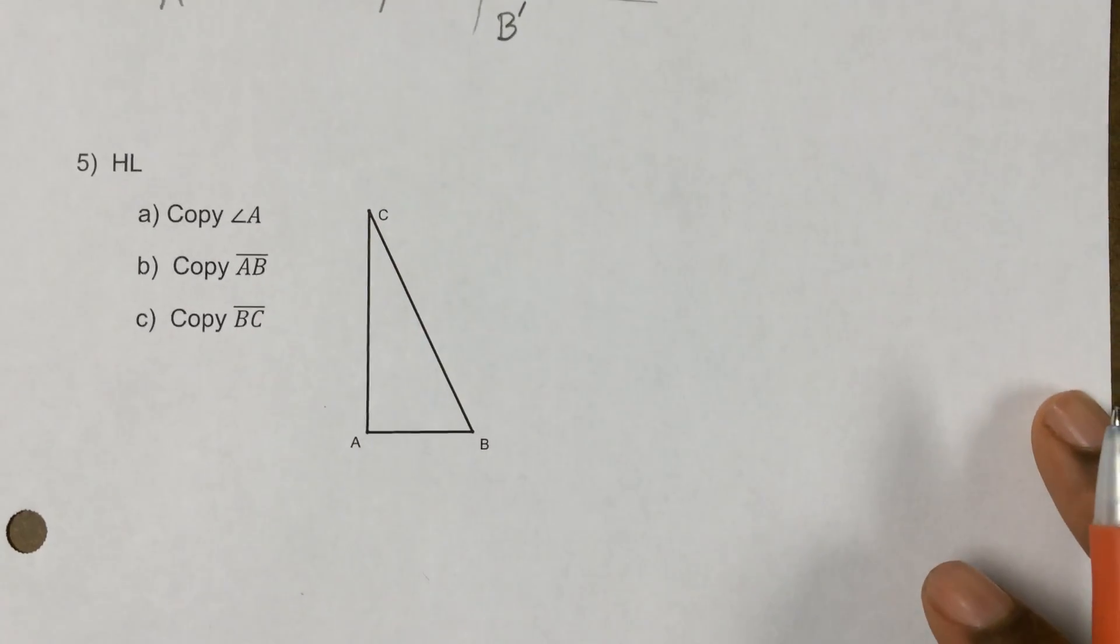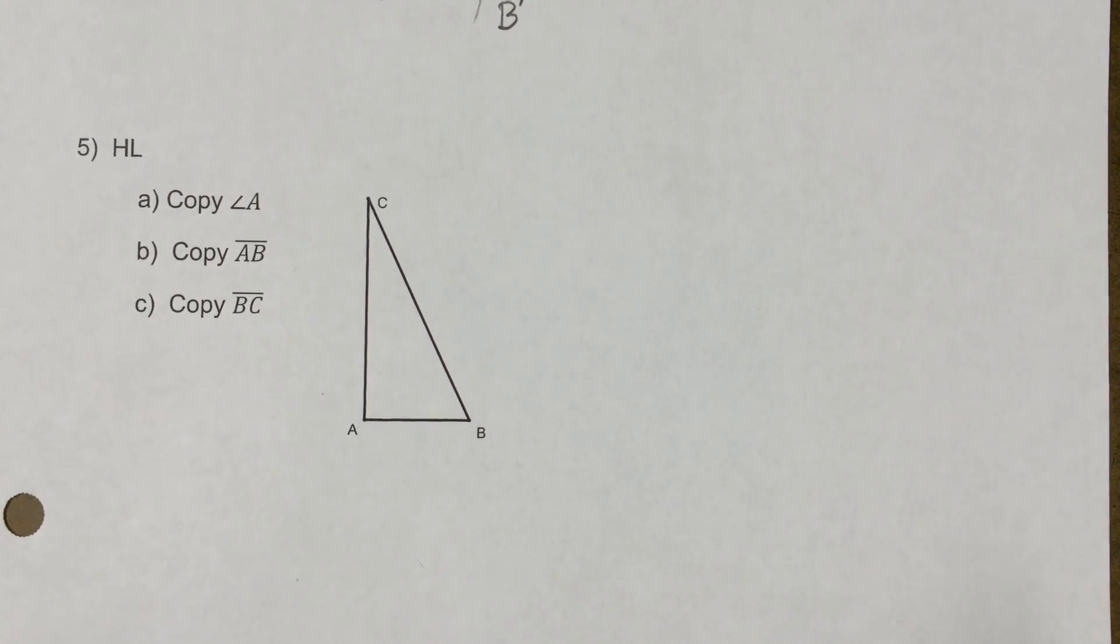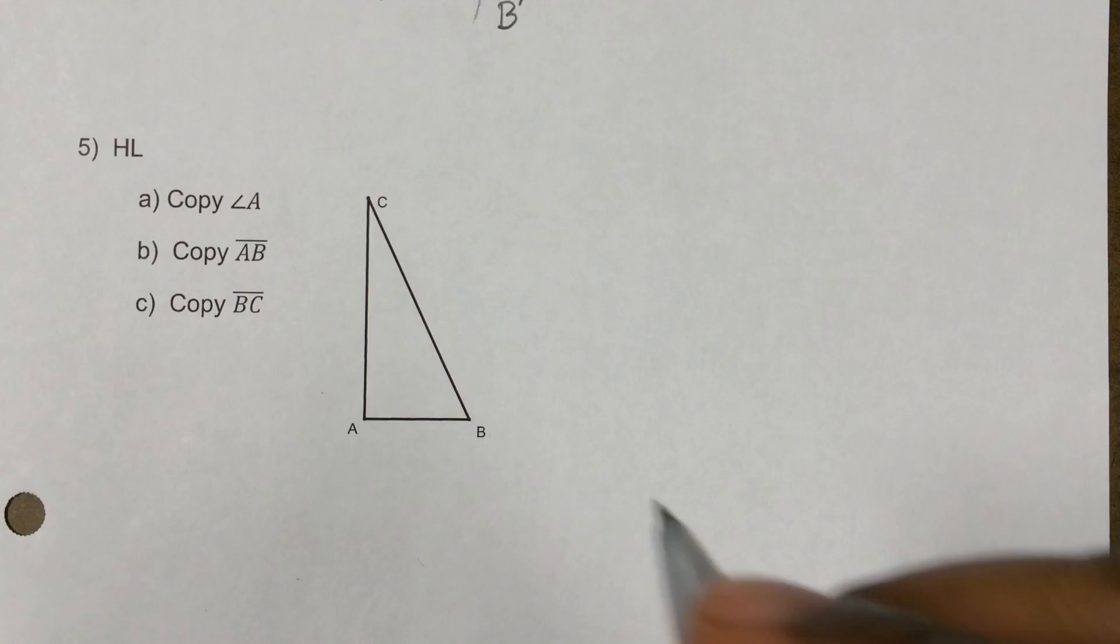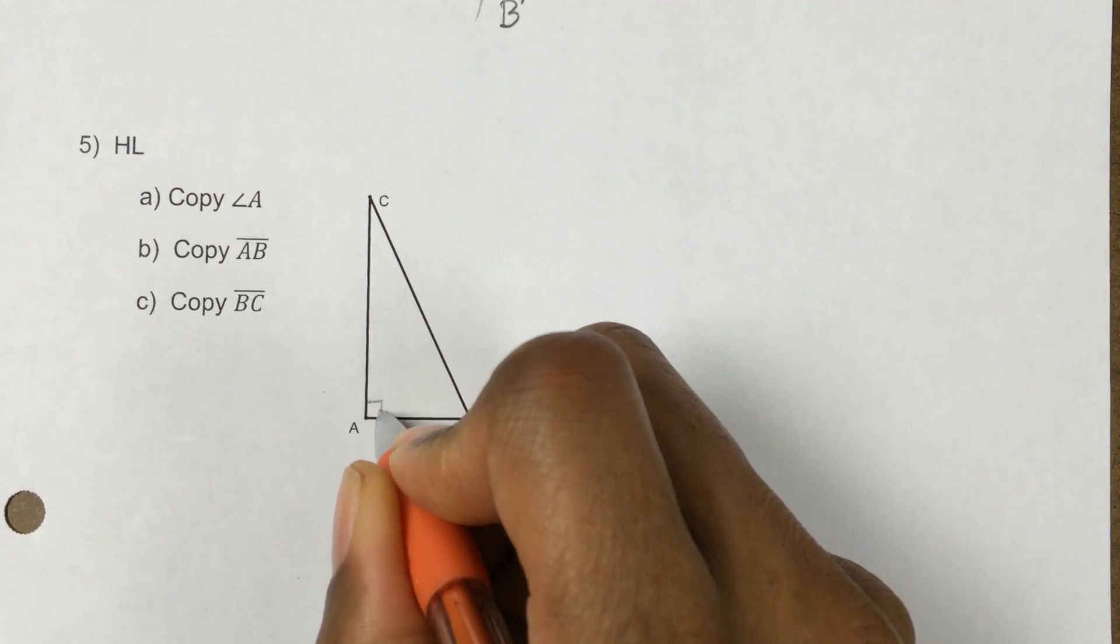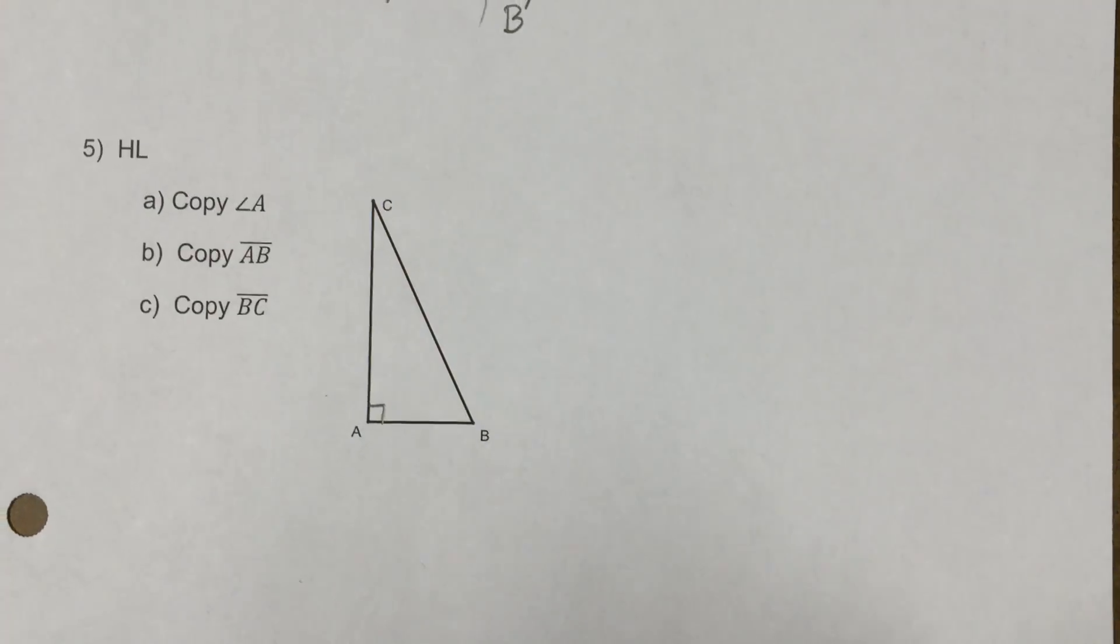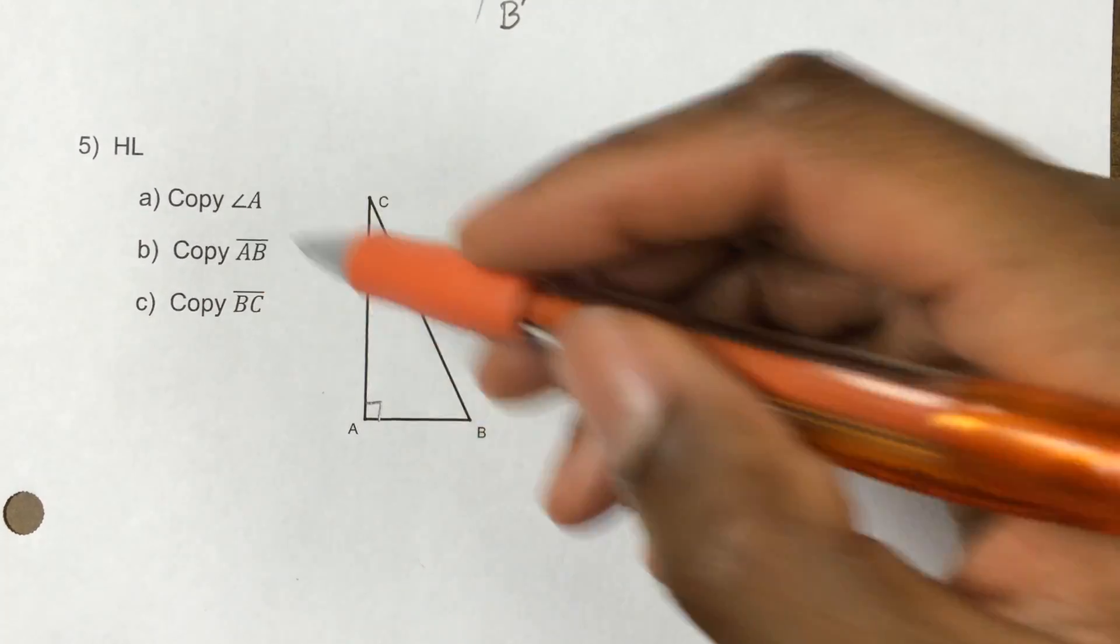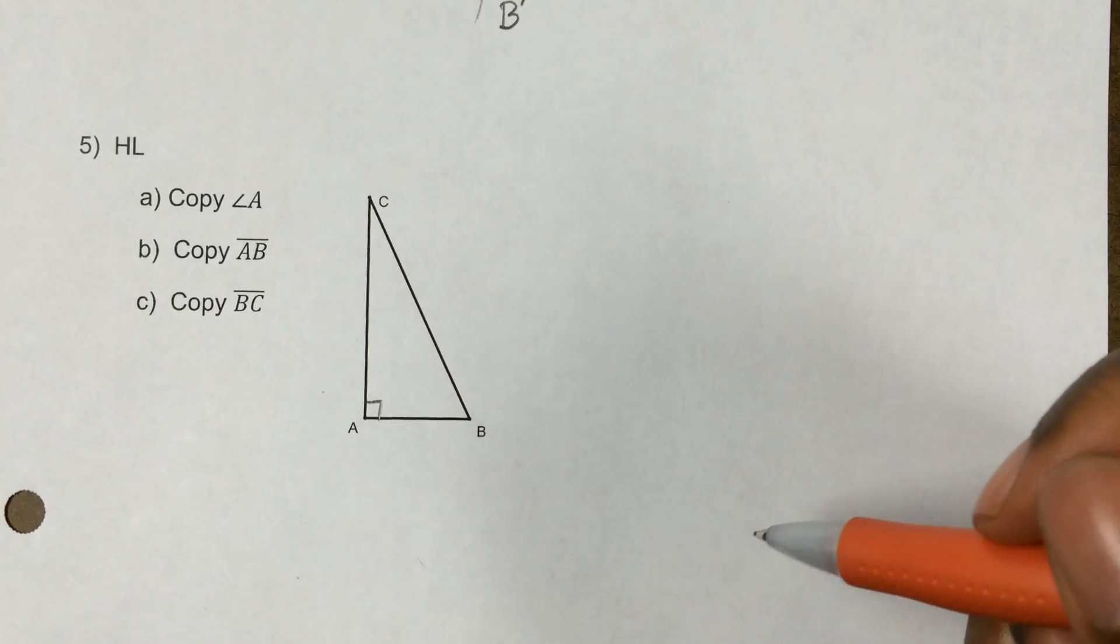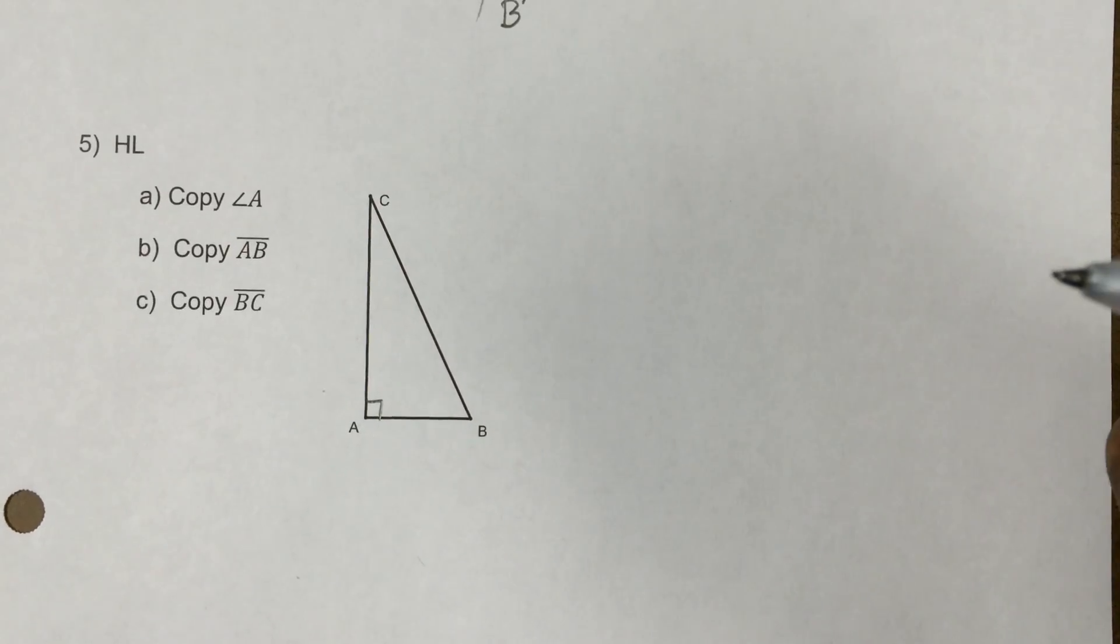But in this video, we're going to focus on hypotenuse leg. So to even be talking about hypotenuse leg, of course, this must be a 90 degree angle that we're talking about. So let's duplicate this copying the hypotenuse and the leg. And of course, this angle, knowing that it's a 90 degree angle.